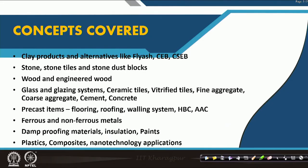Concepts covered in this course will be: clay products and alternate items like fly ash, compressed earth blocks, compressed sterilized earth blocks, stone, stone tiles, stone dust blocks, wood and engineered wood, glass and glazing systems, ceramic tiles, vitrified tiles, fine aggregate, coarse aggregate, cement and concrete — that is module 4. Then we come to precast items: flooring, roofing, walling systems, hollow block concrete, aerated autoclaved concrete, ferrous and non-ferrous metals, damp proofing materials, insulation, paints, and lastly plastics, composites, and nanotechnology applications into building materials.